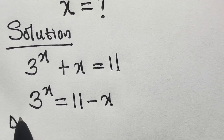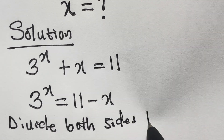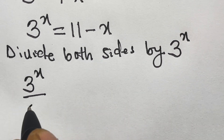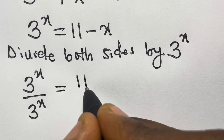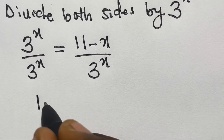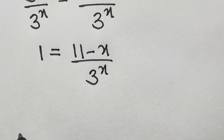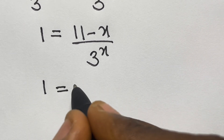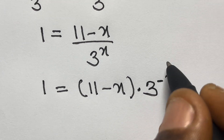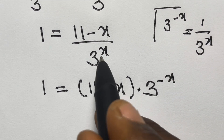So we divide both sides by 3 raised to the power x. If we do, we are going to have 3 raised to the power x divided by 3 raised to the power x equals 11 minus x divided by 3 raised to the power x. This divided by this will give us 1 equals 11 minus x divided by 3 raised to the power x. We have 1 equals 11 minus x, and we take this back to negative index, that is 3 raised to the power minus x. Wherever we have 3 raised to the power minus x, we change this to 1 divided by 3 raised to the power x.